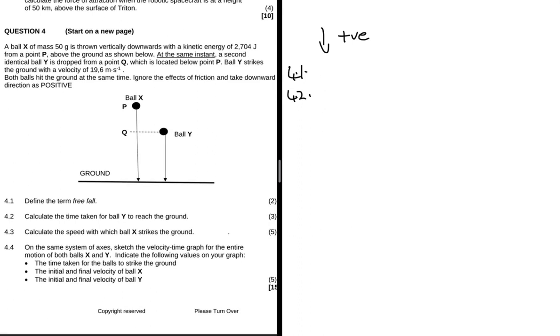Let's pay attention to ball Y. We are told that ball Y is dropped from a point Q, so if it's dropped we know fully well that vi equals zero meters per second. Ball Y strikes the ground with a velocity of 19.6 meters per second, so vf equals 19.6 meters per second.